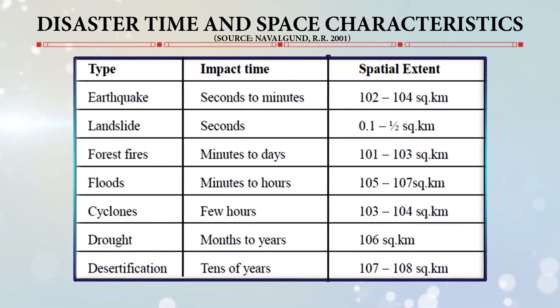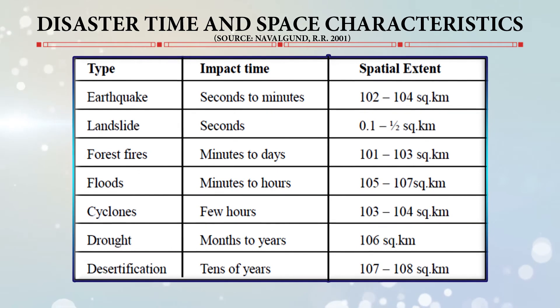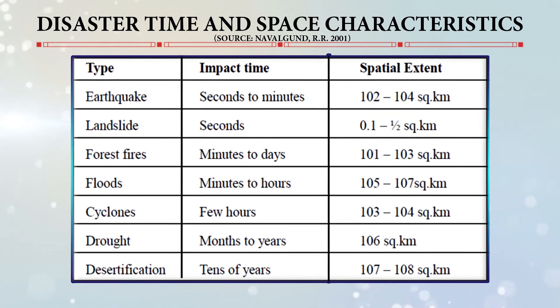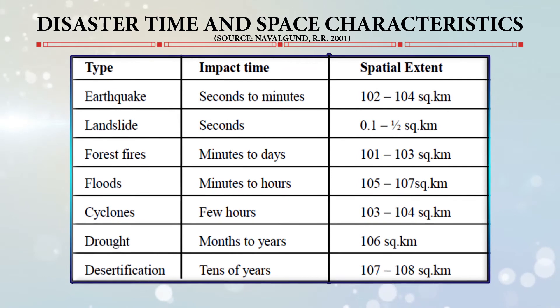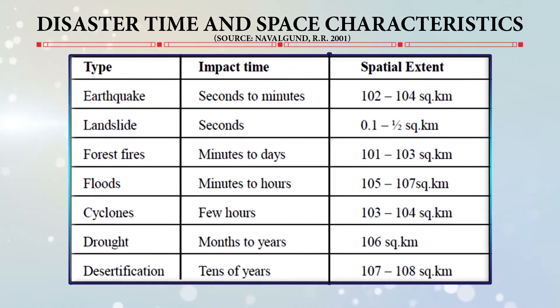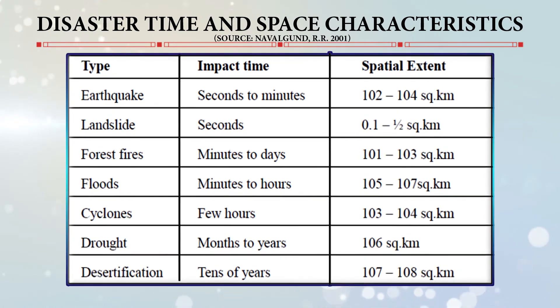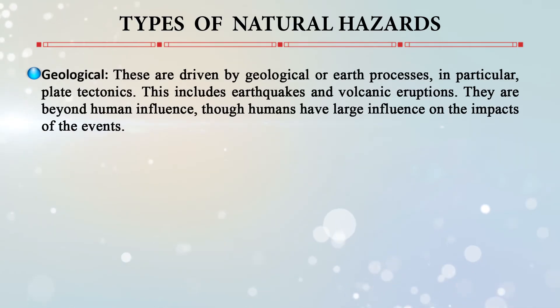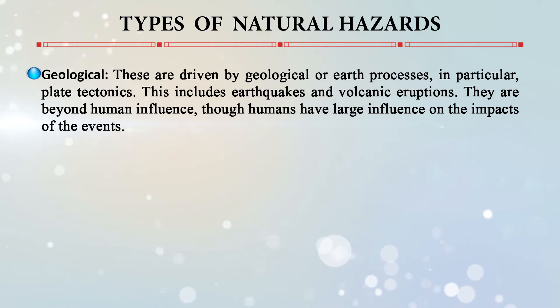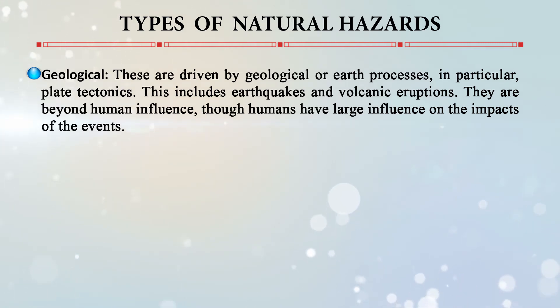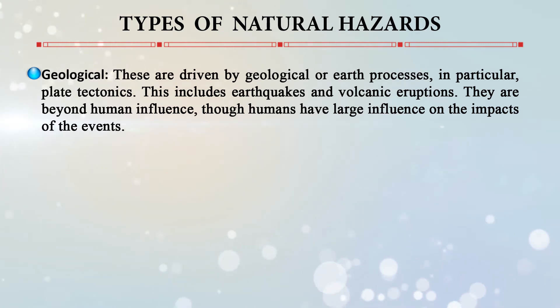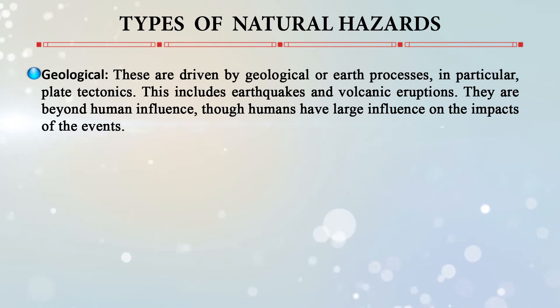Another example from the same table is a cyclone, which can have an impact time of a few hours and a spatial extent of 10² to 10⁴ square kilometers. Disaster time-space characteristics thus form important parameters for research and study. Types of natural hazards can be classified into geological hazards — driven by geological or Earth processes, particularly plate tectonics — which are beyond human influence, though humans have a large influence on the impacts of these events.